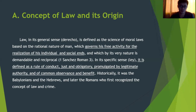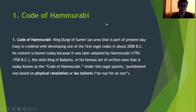Historically, it was the Babylonians, the Hebrews, and later the Romans who first recognized the concept of law and crime. The first notable legal system is the Code of Hammurabi, which was adapted from the Sumerian codes. This legal system was based on physical retaliation, or lex talionis, also famously known by the term 'an eye for an eye.'